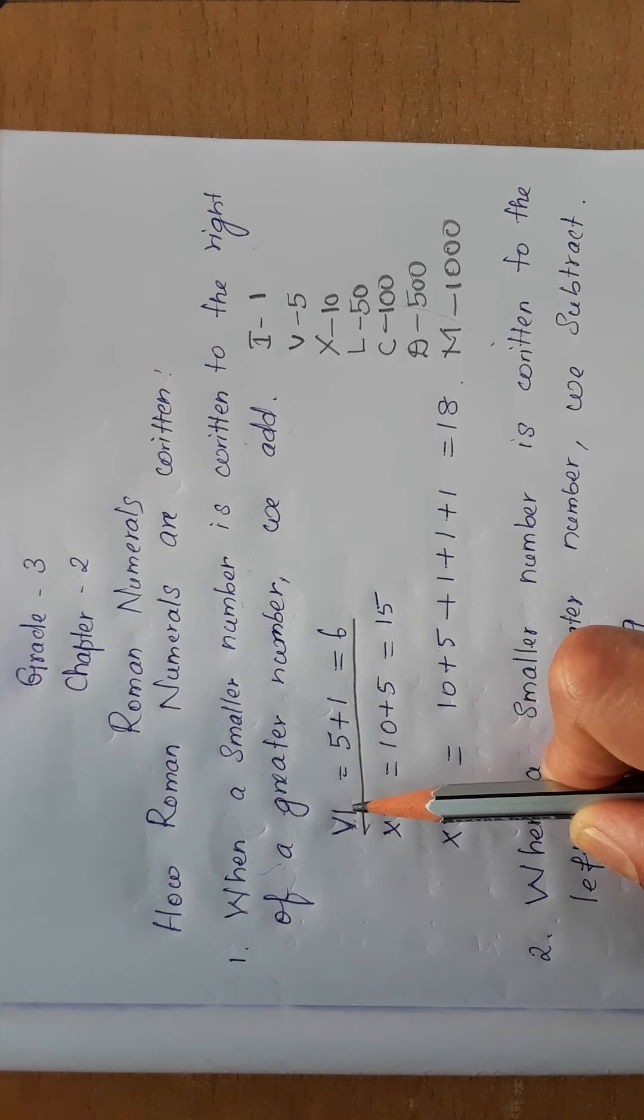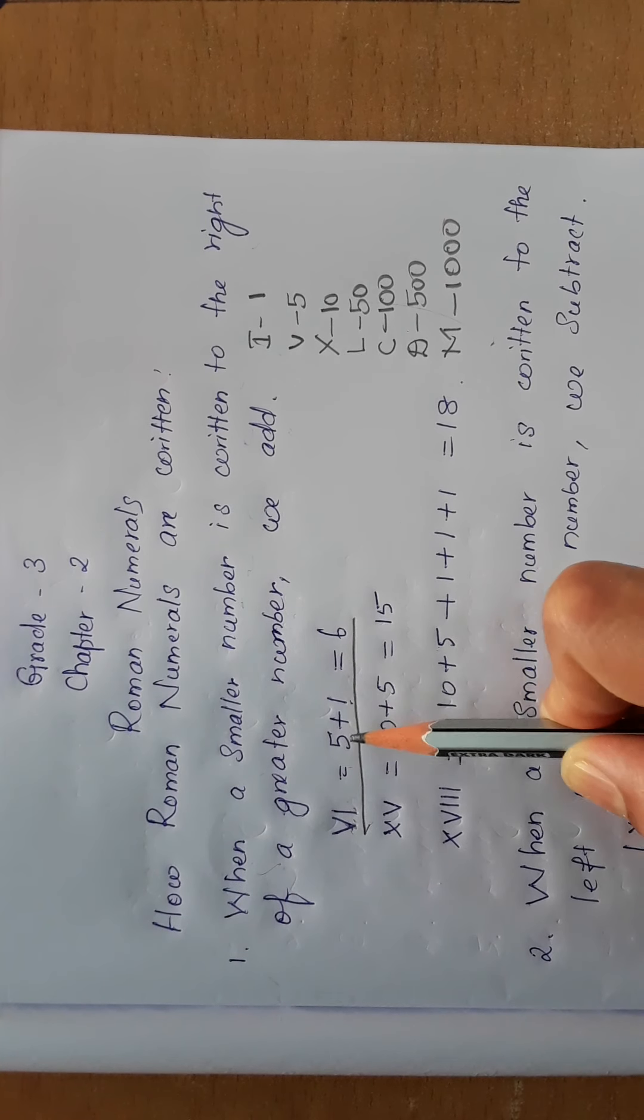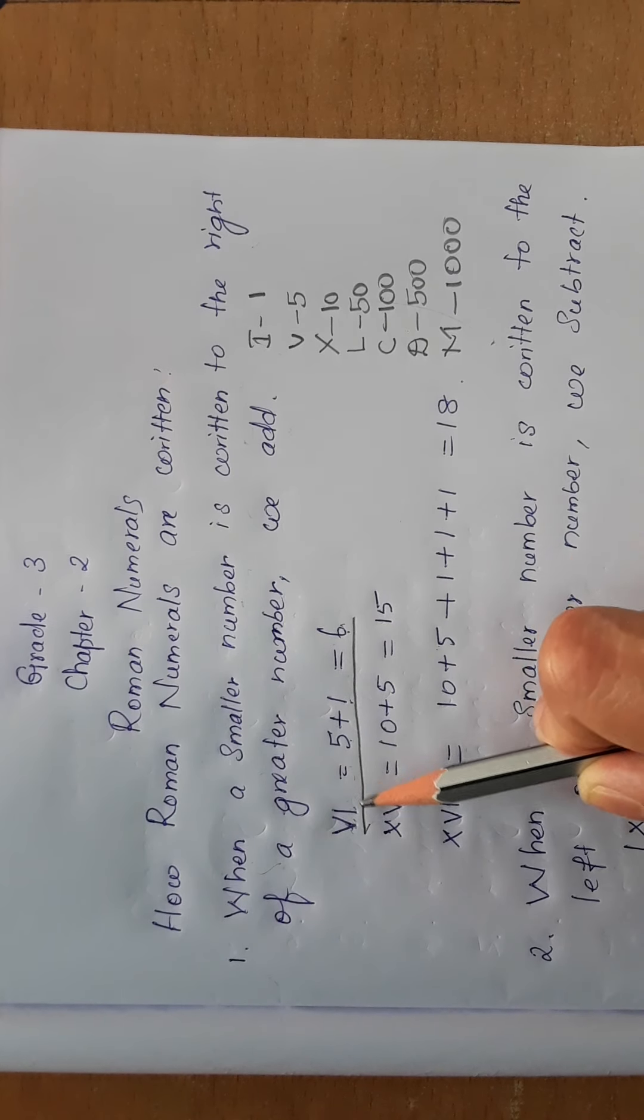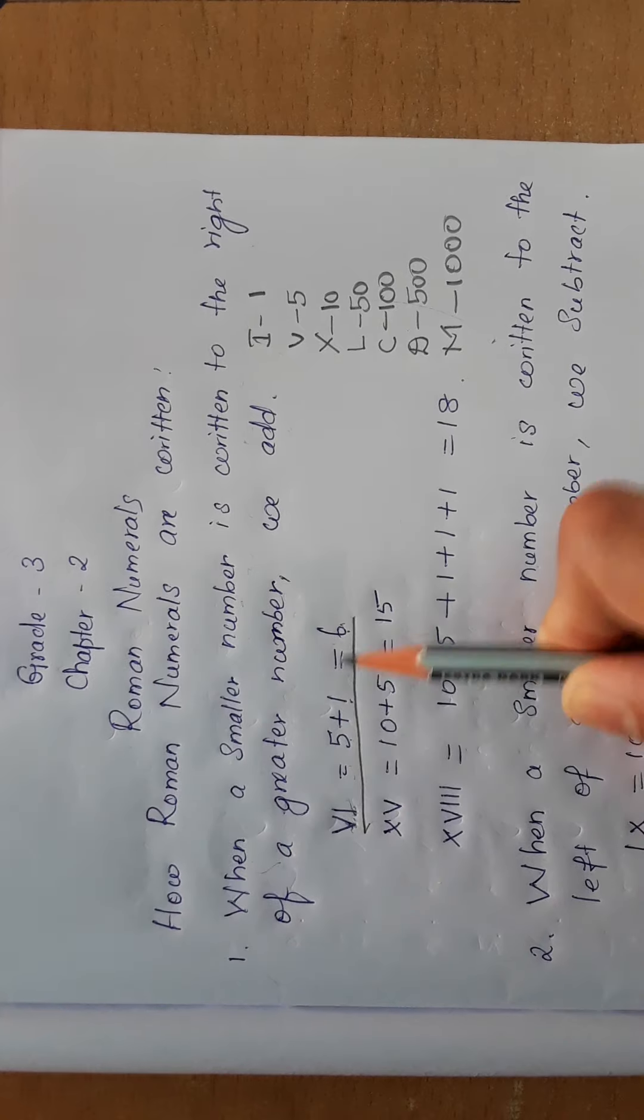V means 5 plus I means 1 equals 6. So how to write 6 in Roman numerals? Look here, this is the way: VI. This is 6, which is 5 plus 1 equals 6.